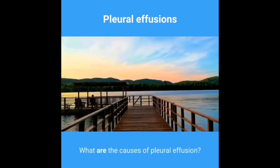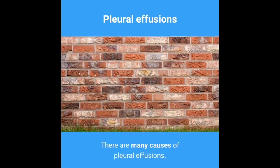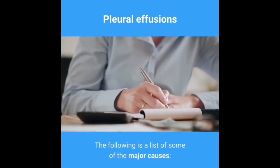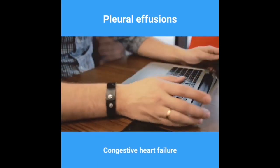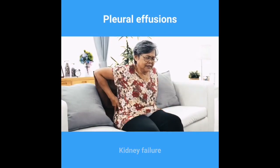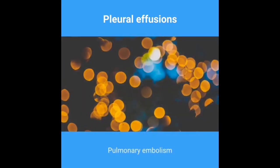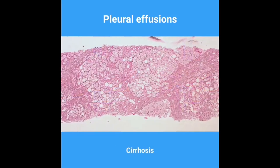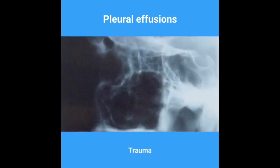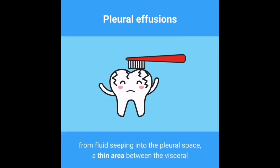There are many causes of pleural effusions. Some of the major causes include congestive heart failure, kidney failure, infection, malignancy, pulmonary embolism, hypoalbuminemia, cirrhosis, lung cancer, and trauma. The development of a pleural effusion occurs from fluid seeping into the pleural space — a thin area between the visceral and pleural membranes in the chest cavity.